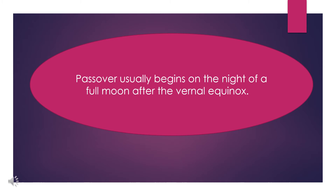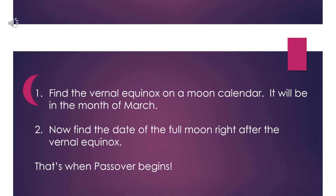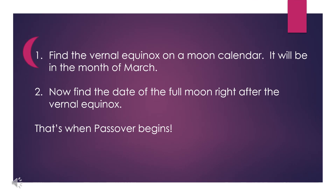Passover usually begins on the night of a full moon after the vernal equinox. Equinox means the day when there are exactly 12 hours of daylight and 12 hours of darkness. Equinox comes from the word equal. The vernal equinox is exactly halfway between winter and summer. Find the vernal equinox on a moon calendar — it will be in the month of March. Then find the date of the full moon right after the vernal equinox. That's when Passover begins.